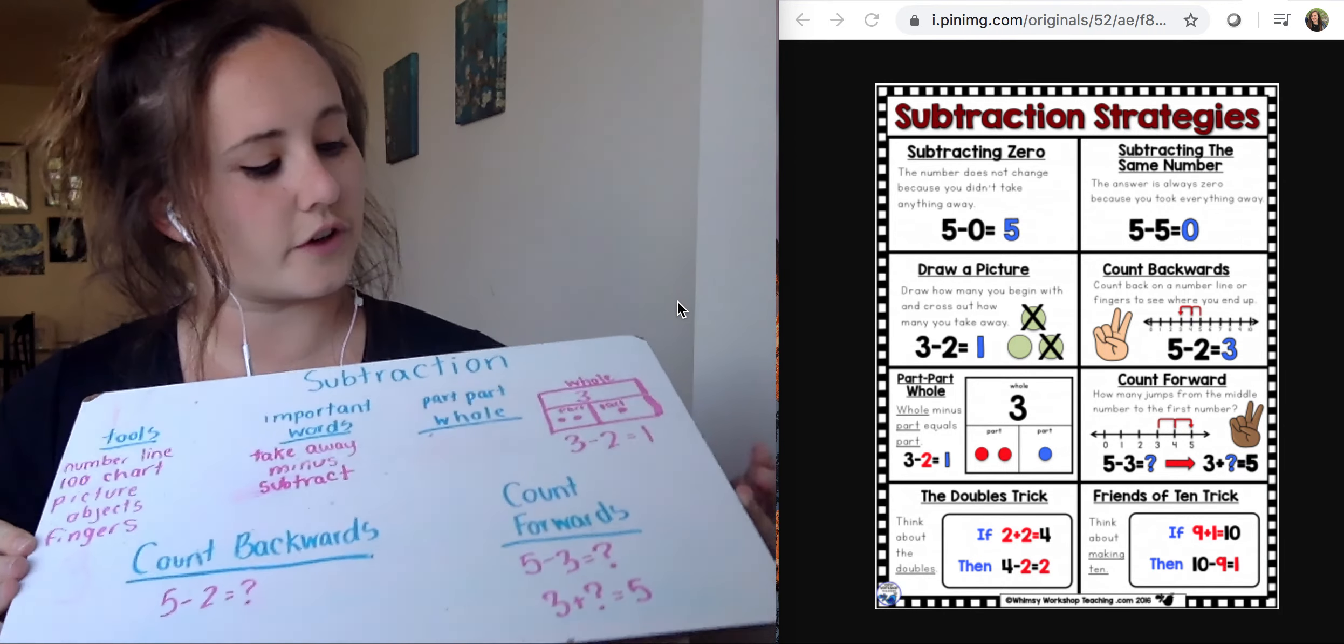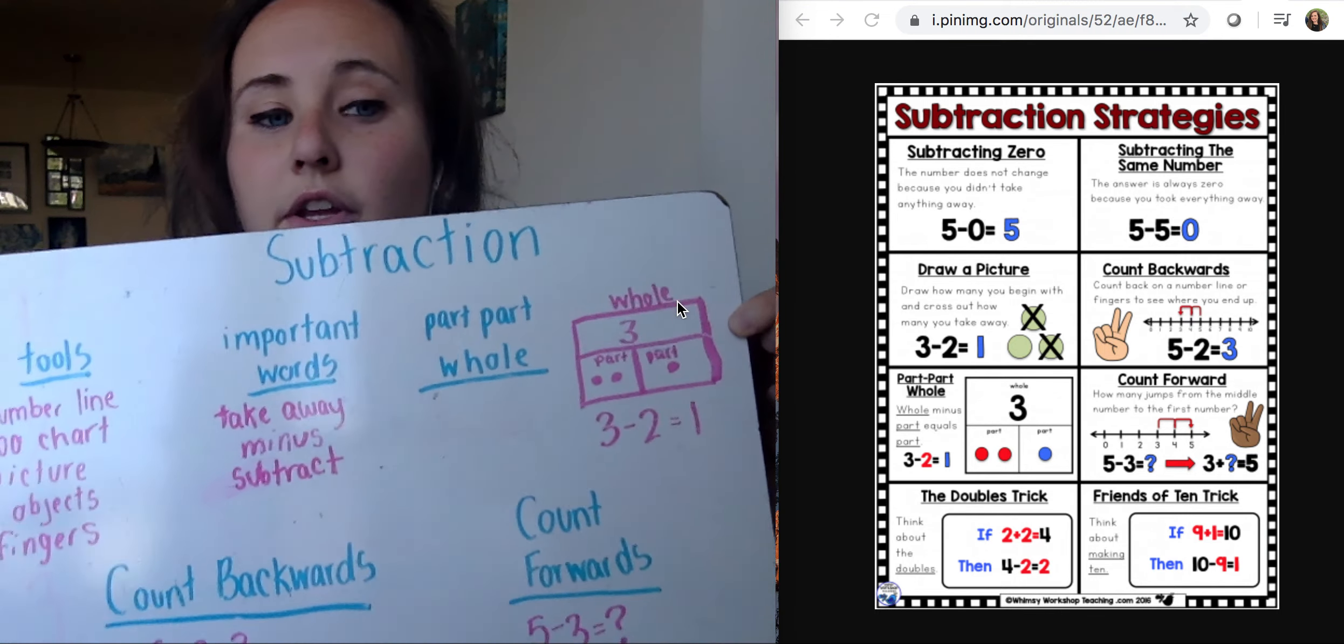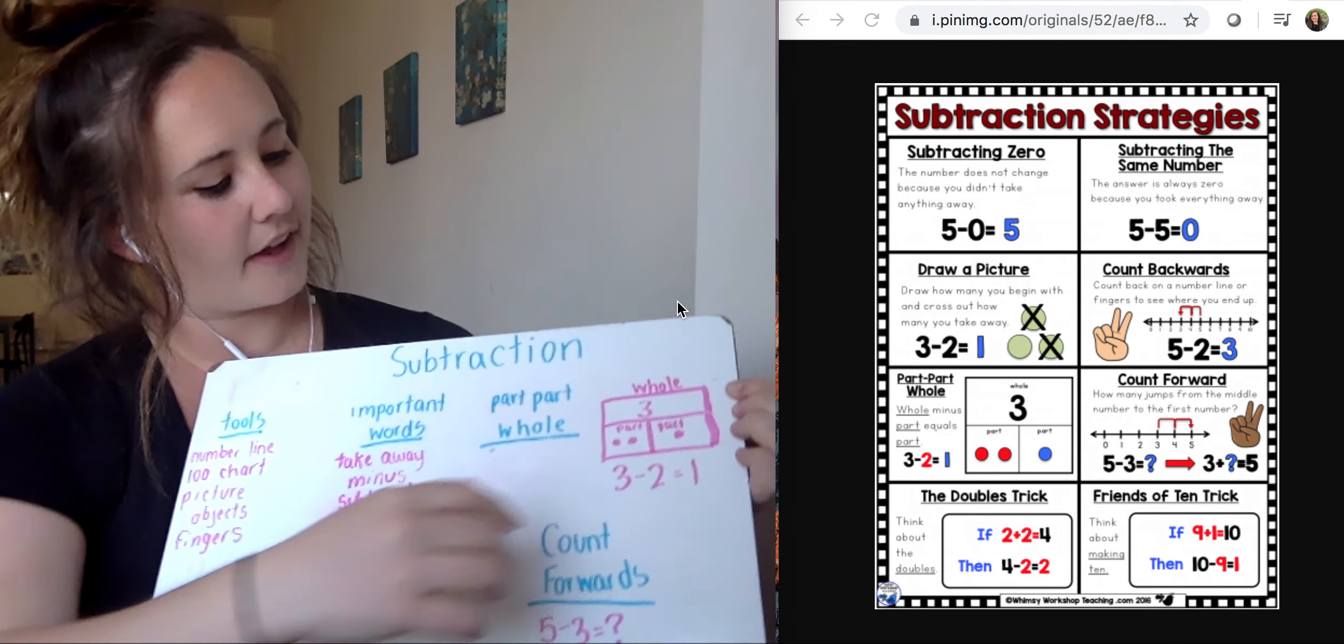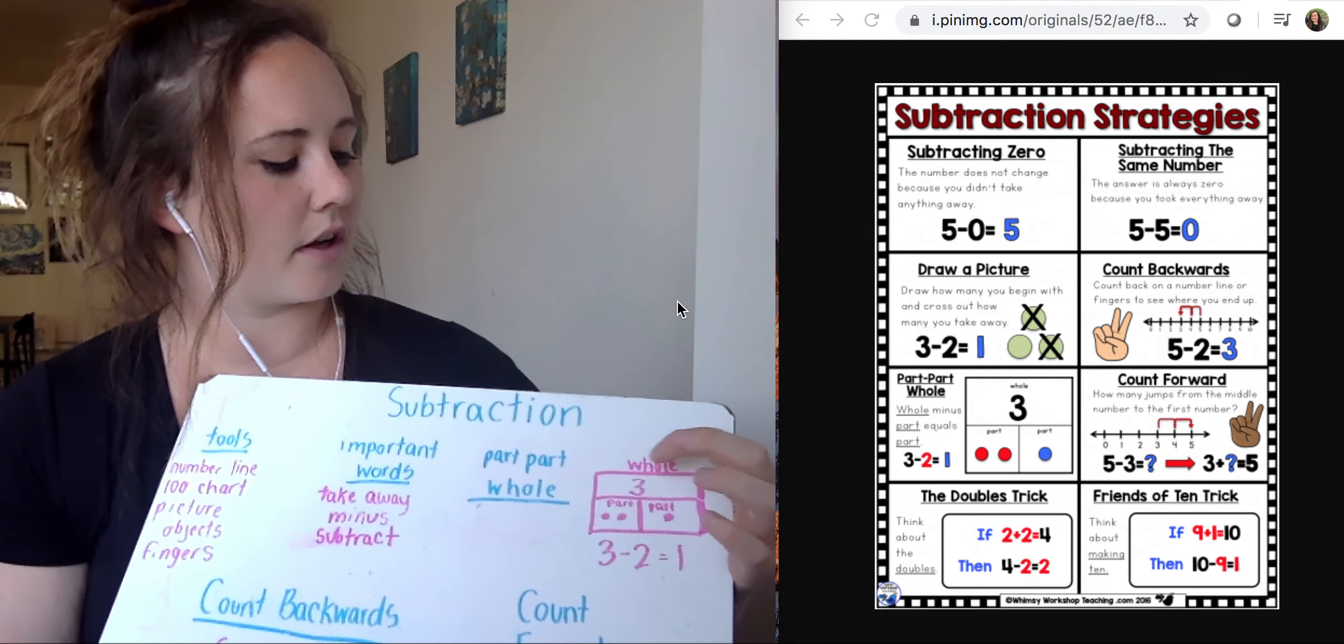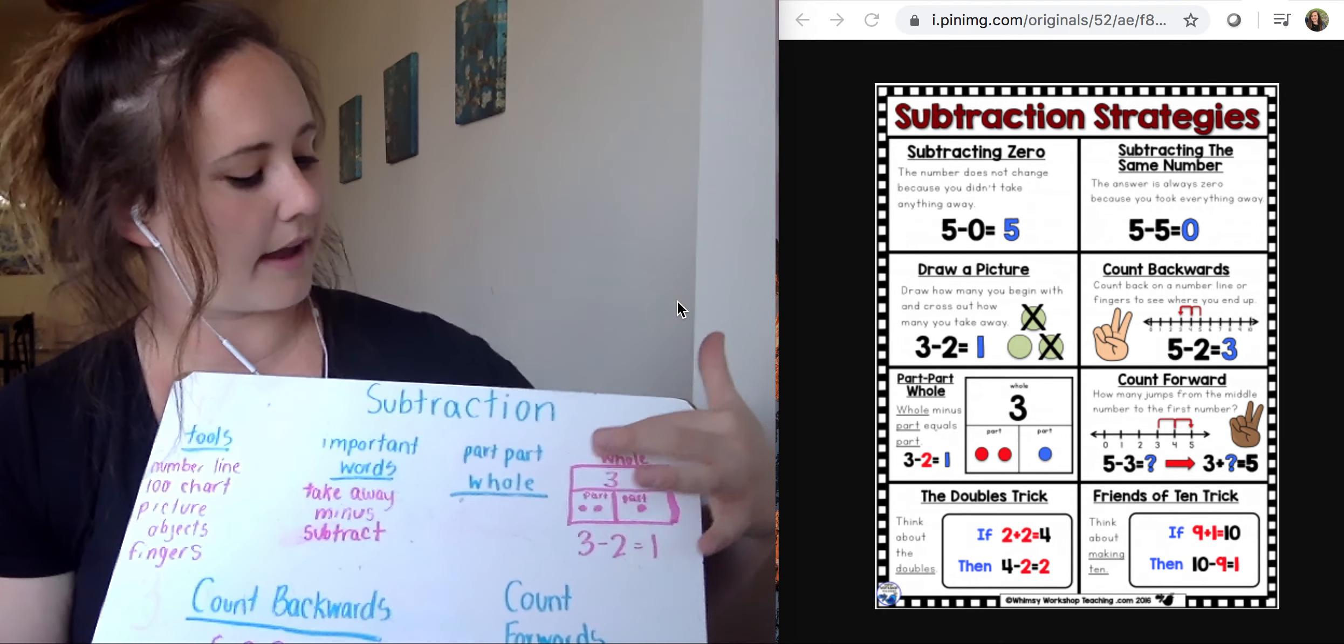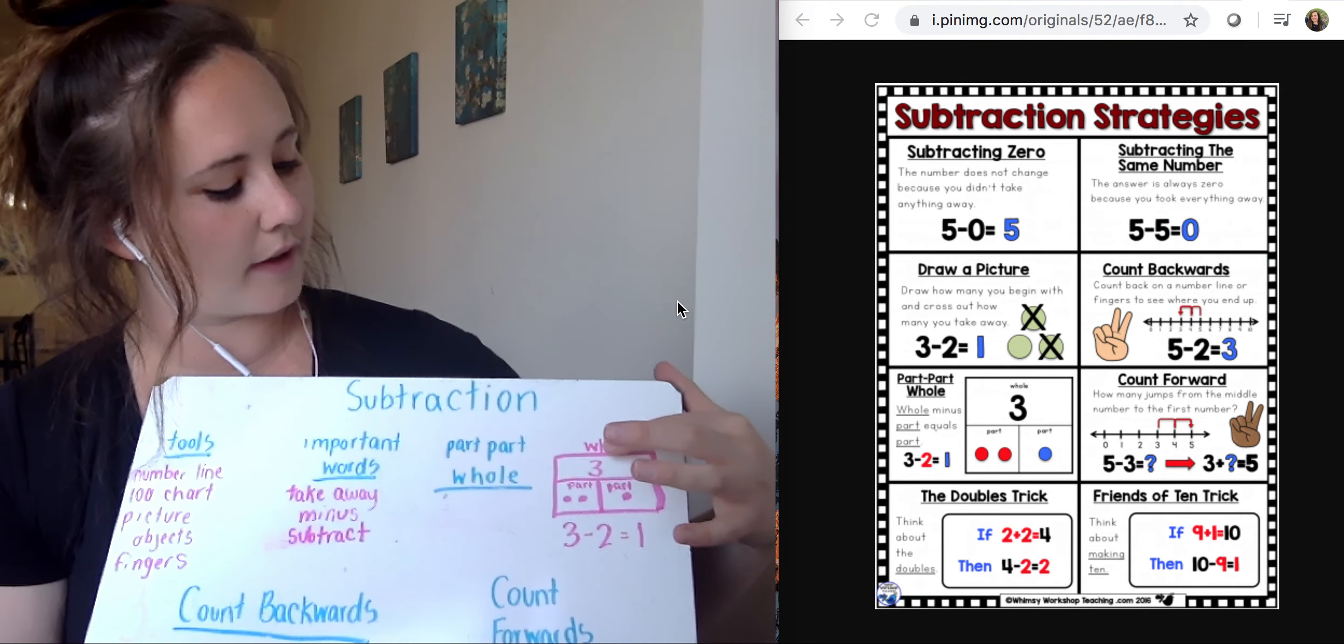So our first part was drawing our part-part-whole model. We use this for addition and for subtraction. As you can see here on my whiteboard I have my three. Three is my whole number, so I put that on the top of my diagram. And then I have my parts that make up my whole. I could see that my parts are split into two and they make up the whole on top.